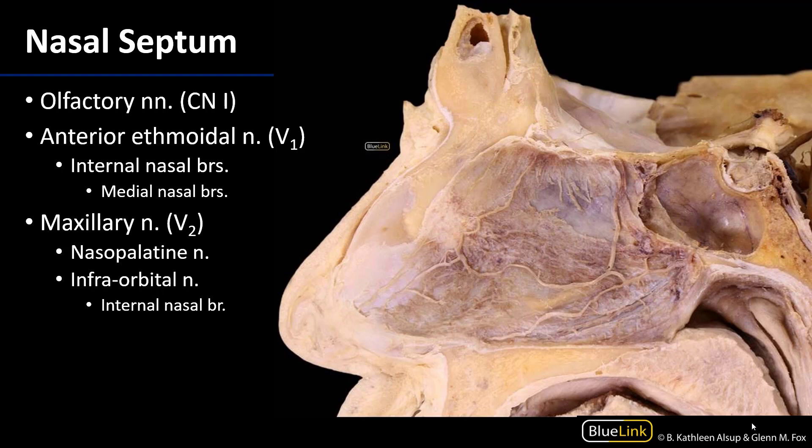With respect to the olfactory epithelium, the olfactory nerves — cranial nerve 1 — descend down through the olfactory foramina of the cribriform plate and are embedded within the olfactory epithelium at the superior portion of the nasal cavity. We can see some of these olfactory nerves here, as indicated by the circle, which have been dissected out of the mucosa.